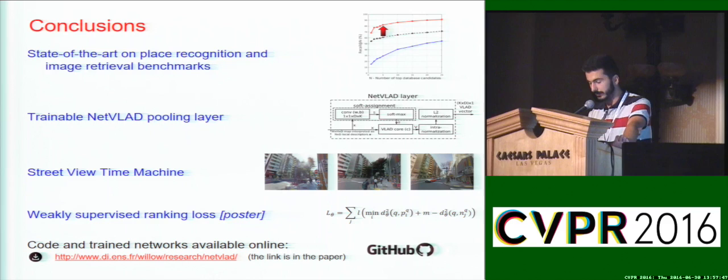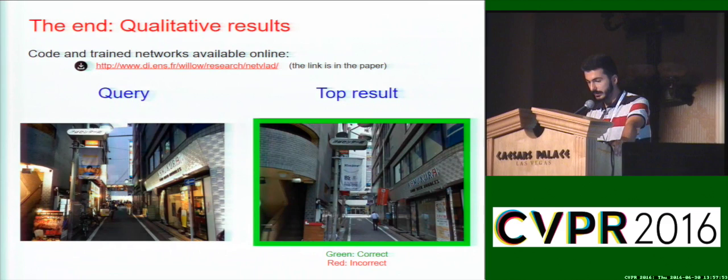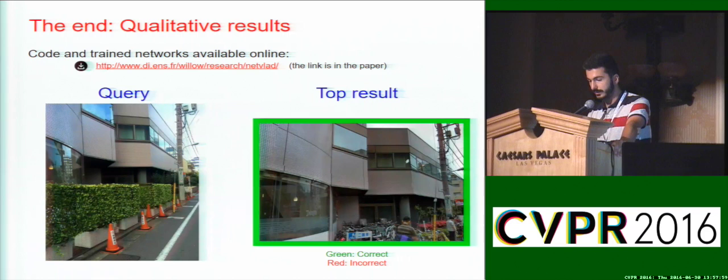Finally, while I take questions, I will play a video with qualitative results. The query image is shown on the left, and the top result is on the right. The green or red box denotes correct or incorrect localization. Note the successful matches across large changes in appearance, not possible using previous methods. Thank you for your attention.